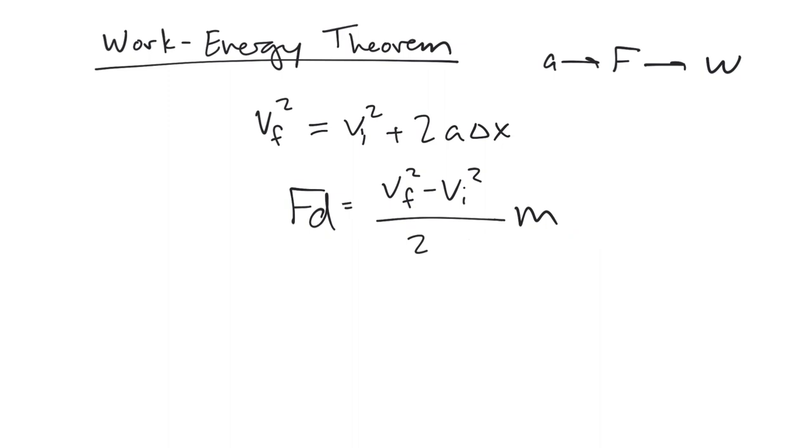And we end up with force times distance, which is the same thing as work, equals VF squared minus VI squared over 2 times M. Now, that might not look like too much, but if we rewrite it a different way, we're going to see something else.